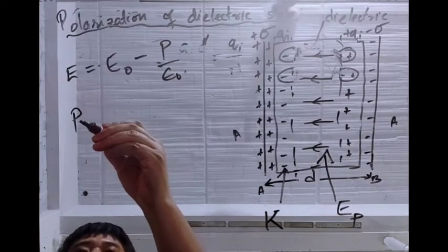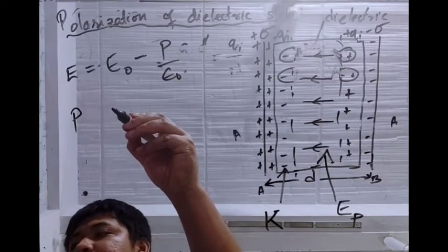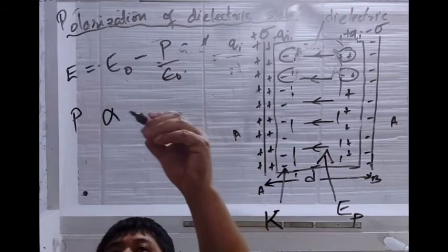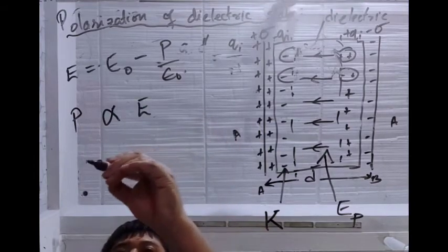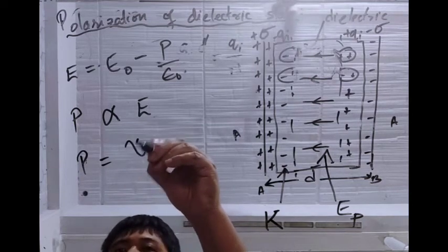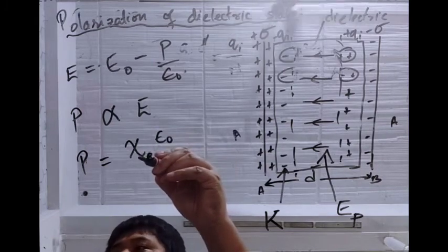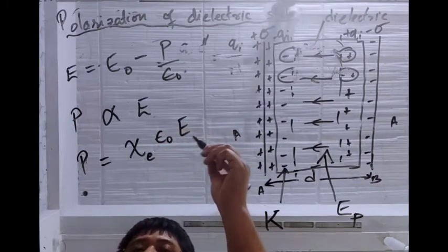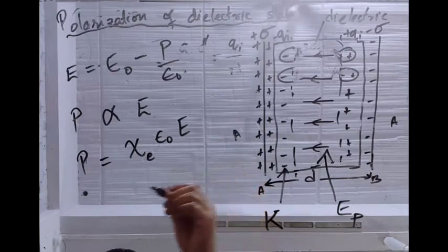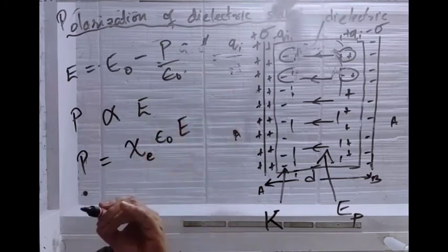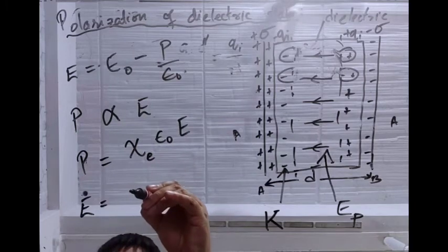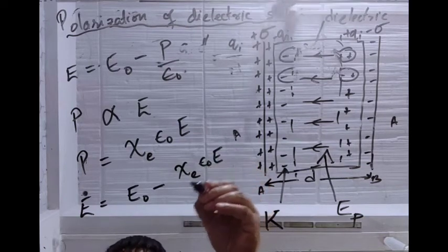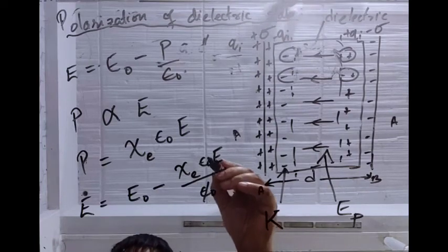It is found that the polarization density P is directly proportional to the reduced field E, such that the constant of proportionality is chi_E times epsilon_naught, where chi_E is the electric susceptibility. So P equals chi_E times epsilon_naught times E.